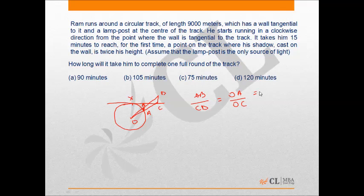Now AB upon CD is half. Thus OA upon OC is half, and that means OC is twice OA.